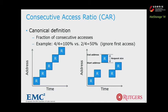In the figures, each rectangle with the letter R represents a request. The X axis shows when they arrive, and the Y axis shows the start and end of the request. The left figure shows a consecutive access ratio of 100% and the right figure shows 50%. We ignore the first access to simplify calculation and use the abbreviation CAR to represent consecutive access ratio.